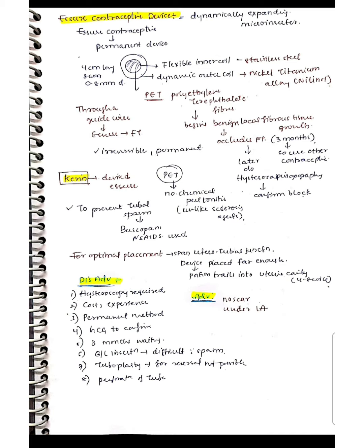During the three months before occlusion is complete, another contraceptive method must be used. After three months, a hysterosalpingogram is performed to confirm tubal blockage. The device is passed through a guide wire into the fallopian tube. This procedure is irreversible and permanent. The device was devised by Kerin. PET fibers do not cause chemical peritonitis, unlike sclerosing agents. Buscopan and NSAIDs can be used to prevent tubal spasms. For optimal placement, the device should span the uterotubal junction, with four to eight coils trailing into the uterine cavity.